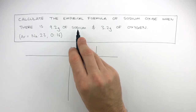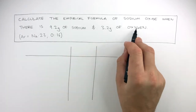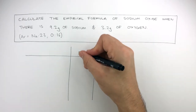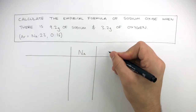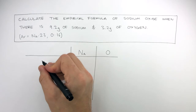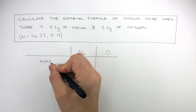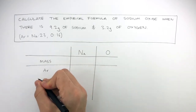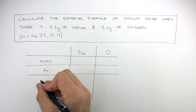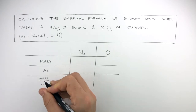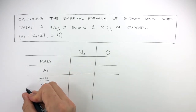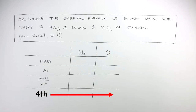The question is asking us about sodium and oxygen — two different elements — so we have two different columns. In one column we write sodium or Na, and in the other we write oxygen or O. In the far left column, we always have the same rows: starting with mass, then Ar, which is relative atomic mass. In the third row we have mass divided by Ar, which is a calculation we always have to do.